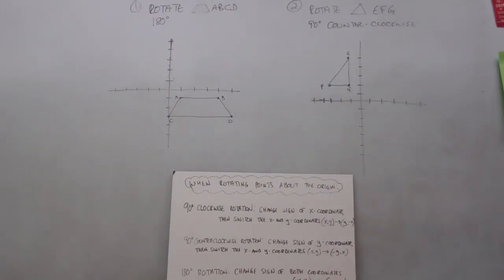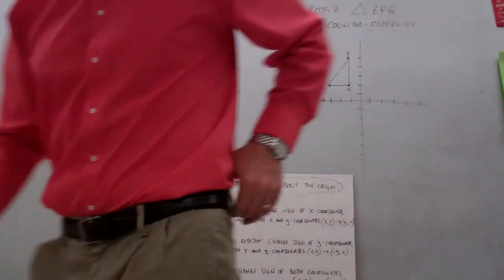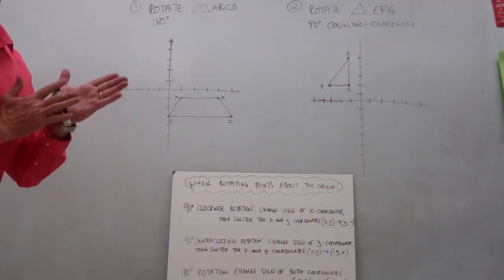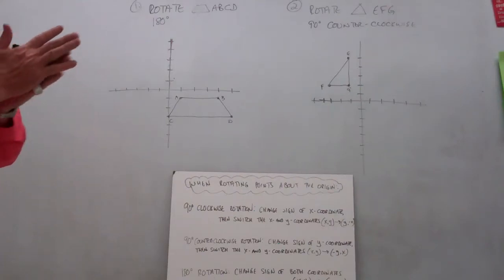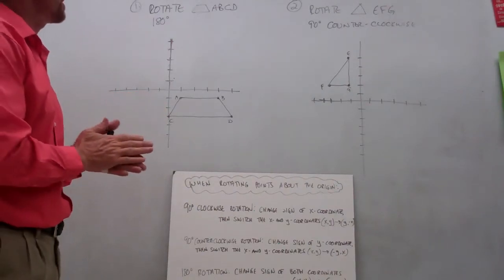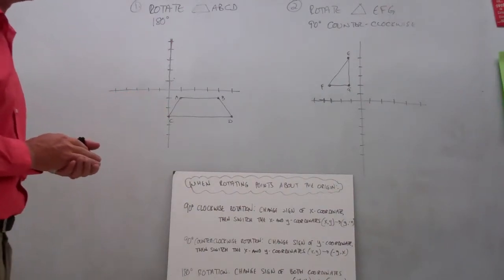Today we're talking about a third type of transformation called a rotation. A rotation is a transformation that turns a figure around a given point called the center of rotation.